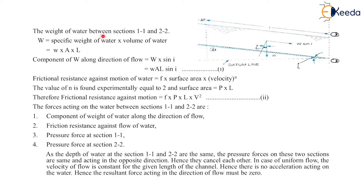Now the weight of water between section 1-1 and 2-2 will be equals to W, that is specific weight of water, into volume of water. Specific weight is indicated by small w and volume of water is area into length. The component of W along the direction of flow will be equals to W·sin(i), so the value of W equals to w·A·L·sin(i), which is the first equation.